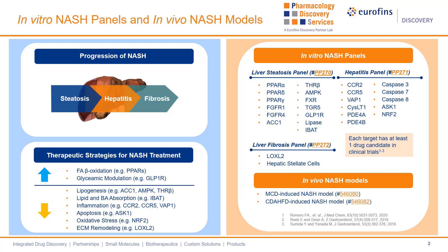Currently, there is still a lack of effective therapeutic agents for the treatment of NASH. Therefore, there are many potential therapeutic strategies, including enhancement of free fatty acid beta oxidation and glycemic modulation, suppression of lipogenesis, lipid and bile acid absorption, or inhibition of inflammation, apoptosis, oxidative stress, and ECM remodeling. Several therapeutic targets are highly involved in these pathological pathways, such as PPARs, ACC1, AMPK, and THR beta.